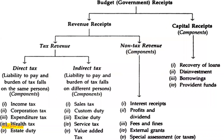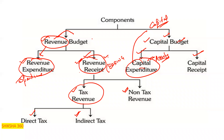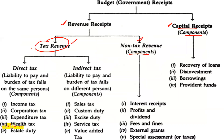Revenue receipts consist of tax revenue (tax income) and non-tax revenue as components. Under tax revenue, we have both direct taxes and indirect taxes.